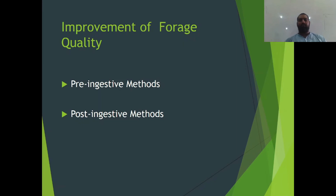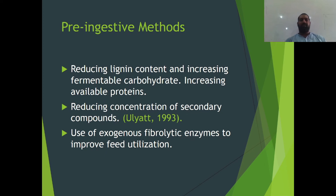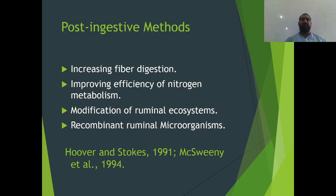Now, how can we improve forage quality? There are two methods: pre-ingestive methods and post-ingestive methods. Pre-ingestive methods work by reducing lignin content, increasing fermentable carbohydrates, increasing available proteins, reducing concentrations of secondary compounds, and using exogenous fibrolytic enzymes to improve feed utilization. Post-ingestive methods include increasing fibrodigestion, improving efficiency of nitrogen metabolism, modification of the ruminal ecosystem, and use of recombinant ruminal microorganisms.